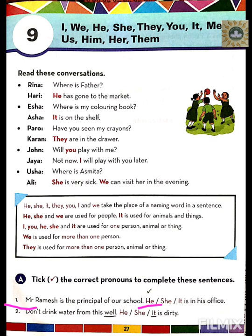Number two: Don't drink water from this well. He/she/it — it is dirty. Because the well is a non-living thing, we will use 'it,' as I have already told you.